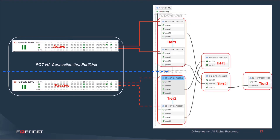When the top FortiGate is active, the MCLAG pair connected to the top FortiGate is Tier 1, and this is how the tiering works. When the bottom FortiGate becomes active, the Tier 1 MCLAG pair changes dynamically — there is a dynamic change between Tier 1 and Tier 2 — and it retains switching connectivity and overall network connectivity seamlessly even while changing the tiers. This is how site-to-site redundancy with a single FortiLink instance is achieved.